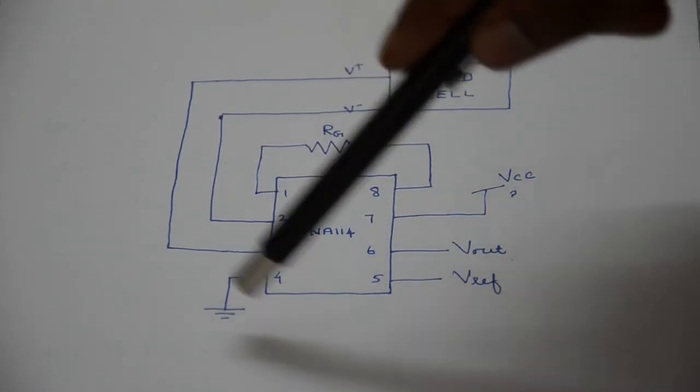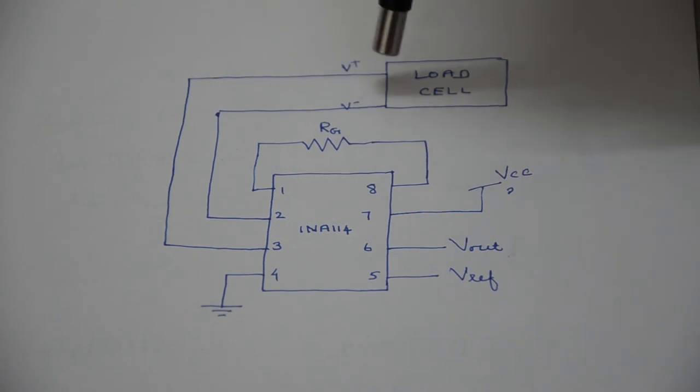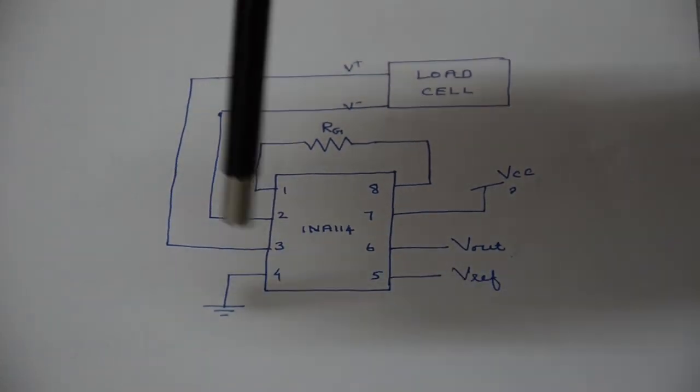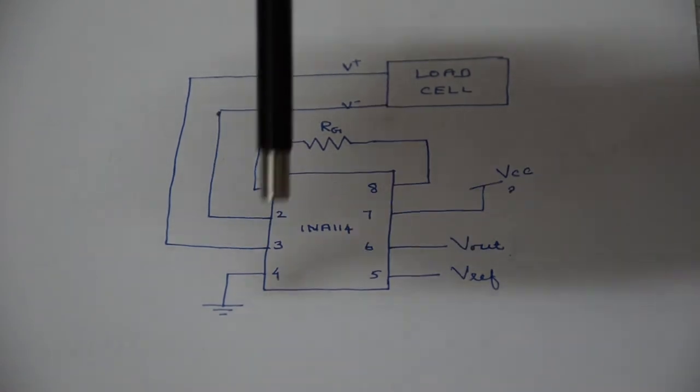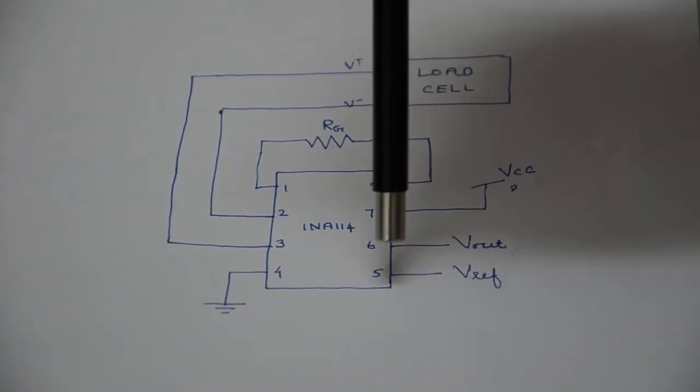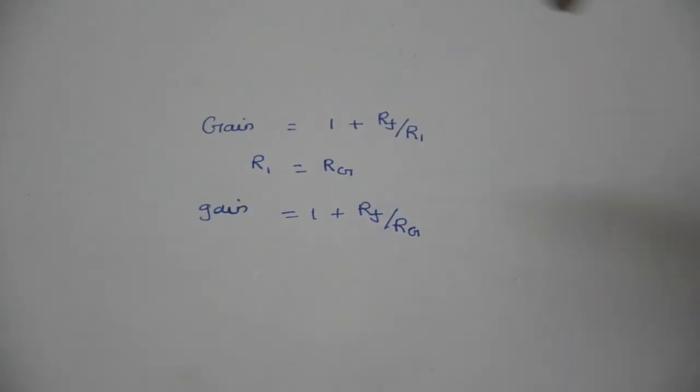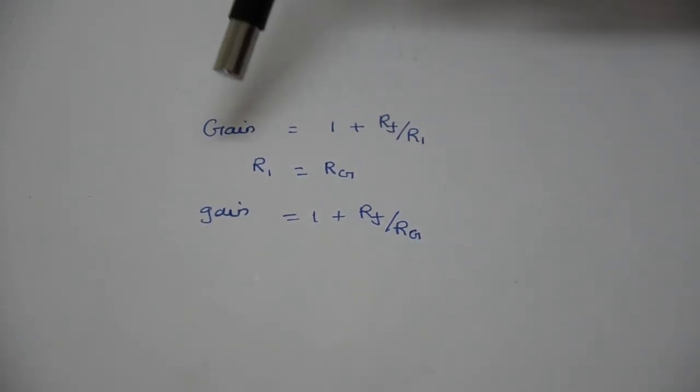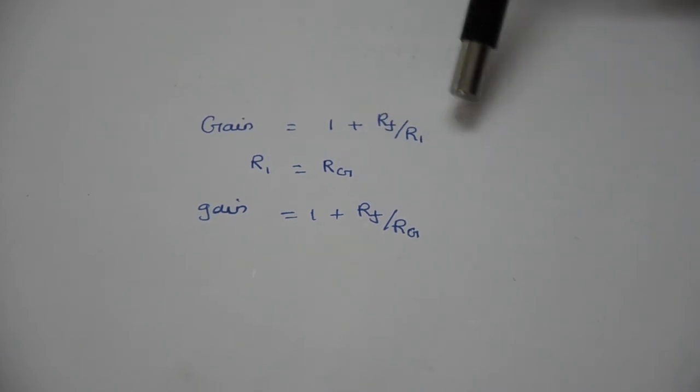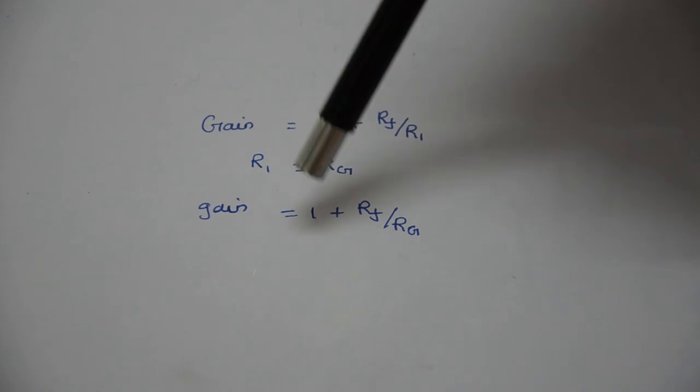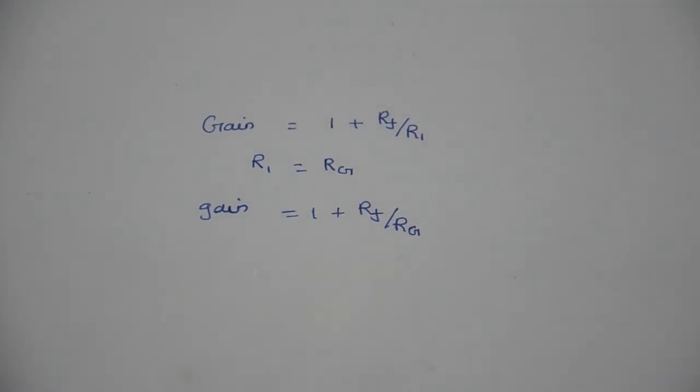The pin description for the instrumentation amplifier is shown here. The output from the load cell is given to the third and second pin. The Vref is taken from the fifth pin. The Vout is taken from the sixth pin. The gain of the instrumentation amplifier is calculated using the formula Gain = 1 + Rf/R1. Here R1 = Rg, therefore Gain = 1 + Rf/Rg.